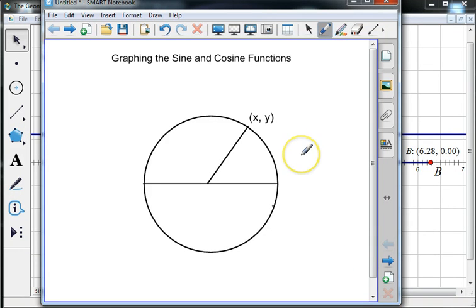In this screencast, we're going to talk about how you graph the sine and cosine functions. And to start with, I'm on a unit circle. That means the radius is 1.